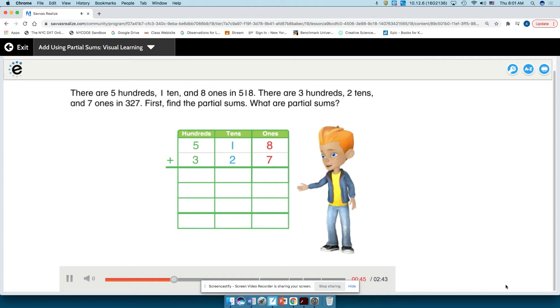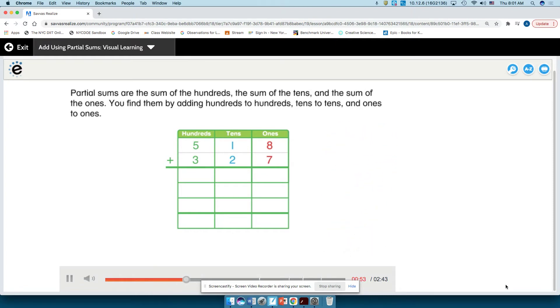First, find the partial sums. What are partial sums? Partial sums are the sum of the hundreds, the sum of the tens, and the sum of the ones. You find them by adding hundreds to hundreds, tens to tens, and ones to ones.